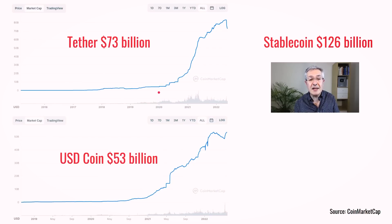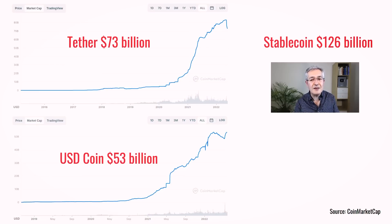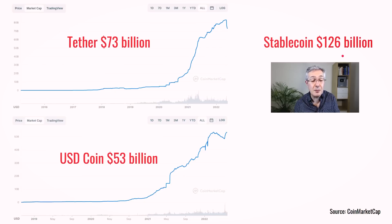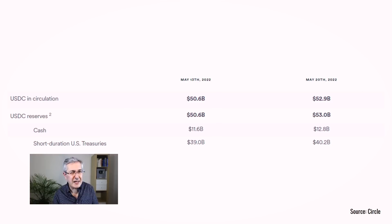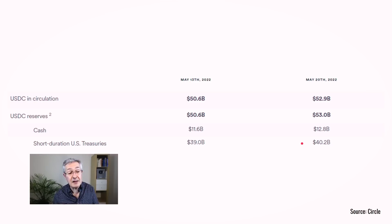Since the beginning of 2020 we've also seen rapid growth in stablecoins, which are very much like money market funds — their goal is never to be worth less than a dollar, linked directly to the dollar's value. If we add up Tether's market cap with that of USD Coin, the largest stablecoins, the total is about 126 billion dollars. USD Coin is transparent about its holdings: as of May 20th it held about 13 billion in cash and about 40 billion in short-duration US Treasuries — probably T-bills with a maturity of less than a year.